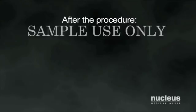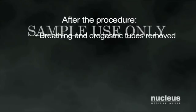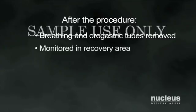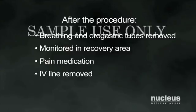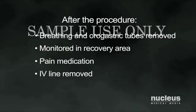After the surgery, your breathing and orogastric tubes will be removed and you will be taken to the recovery area for monitoring. You will be given pain medication as needed and will progress slowly from a liquid to a soft to a solid diet. Your intravenous lines will be removed once your gastrointestinal system recovers. Most elective cholecystectomy patients can leave the hospital within 24 hours.